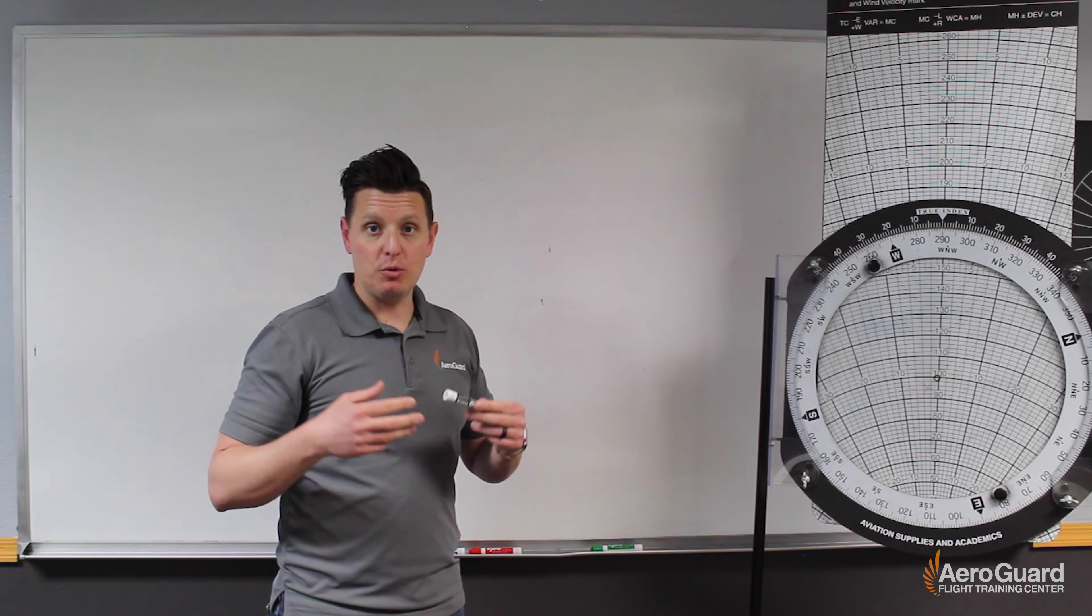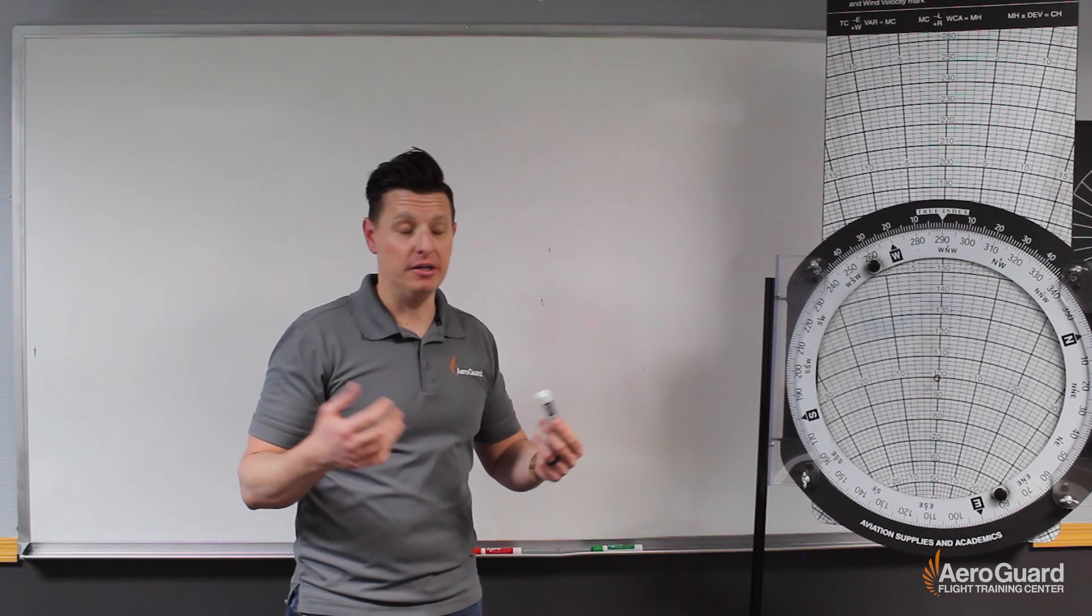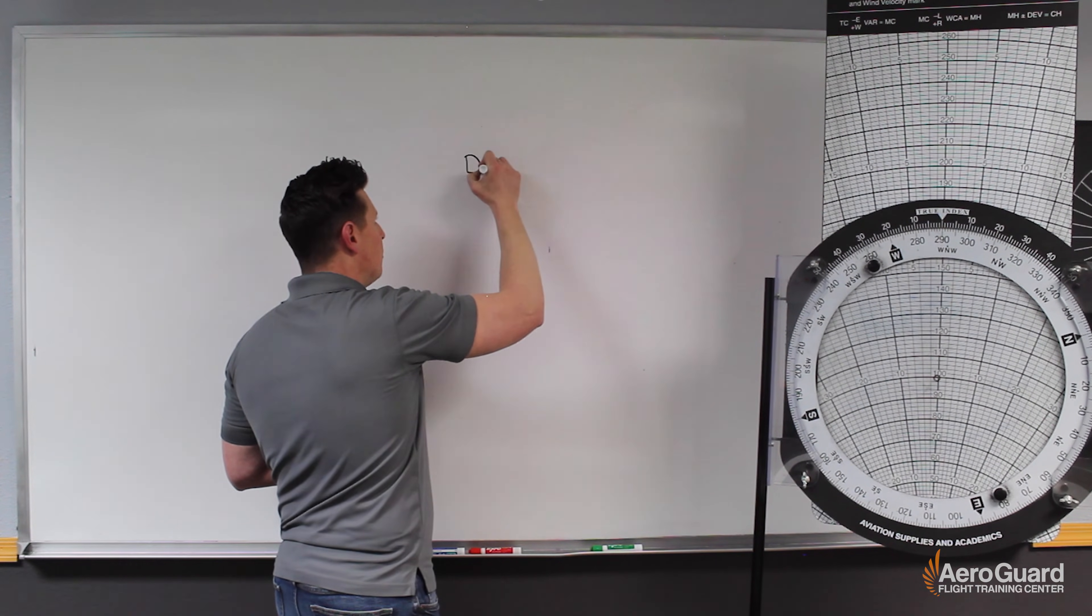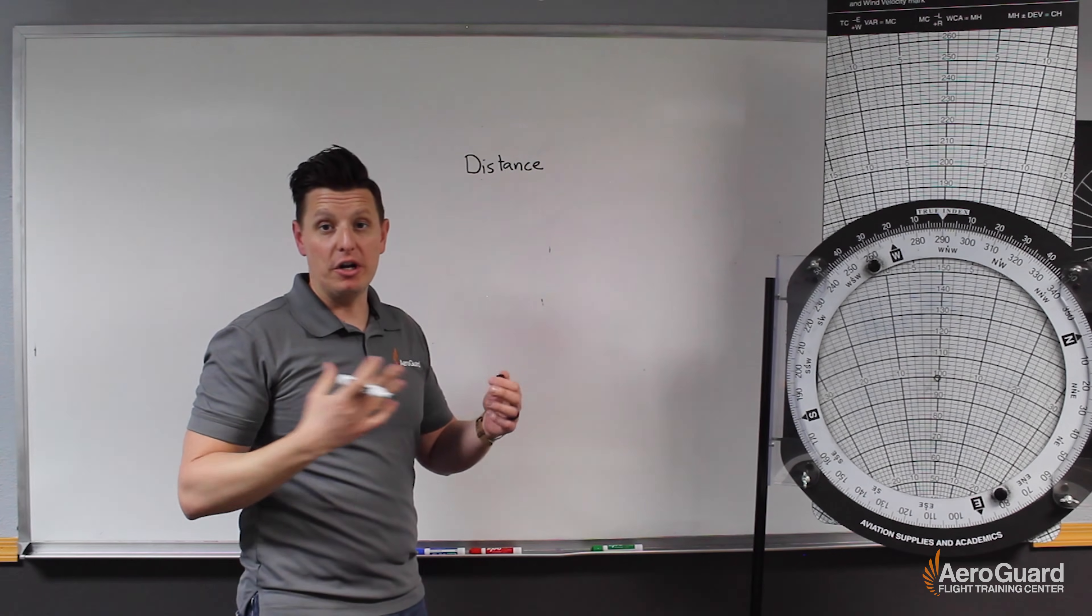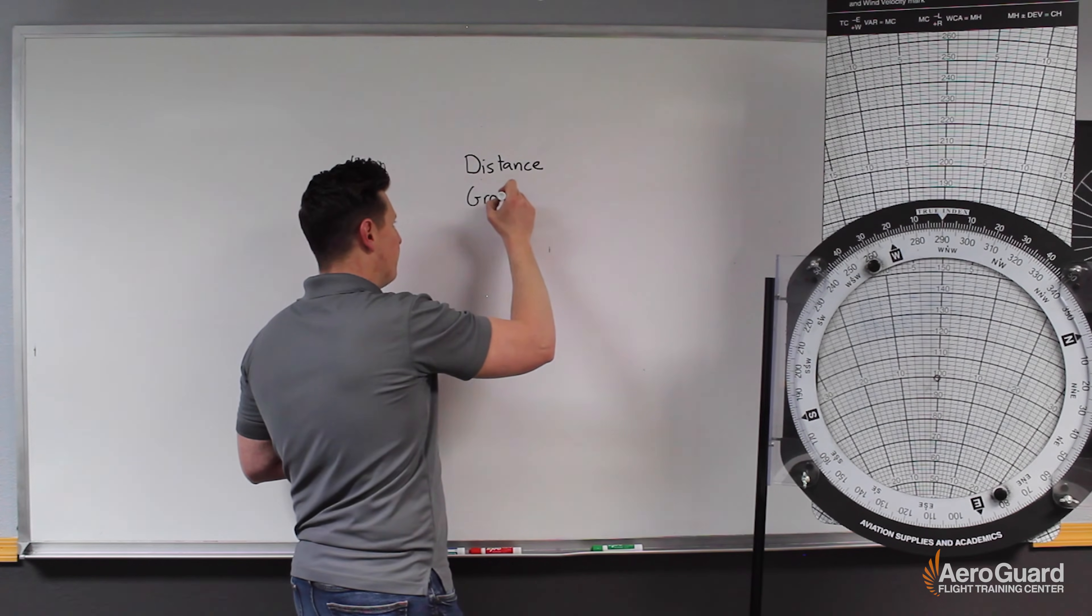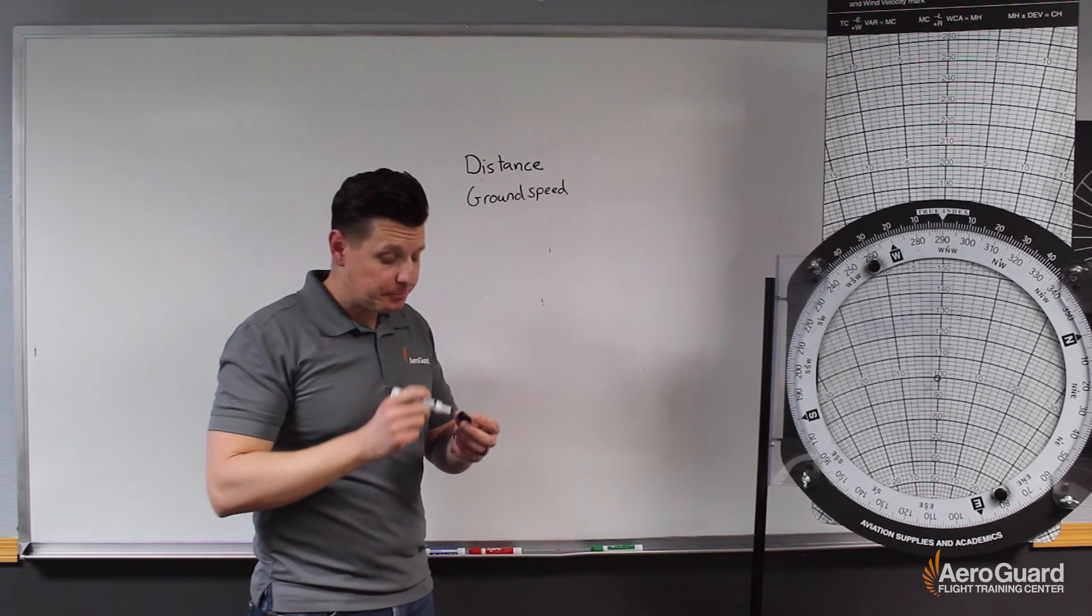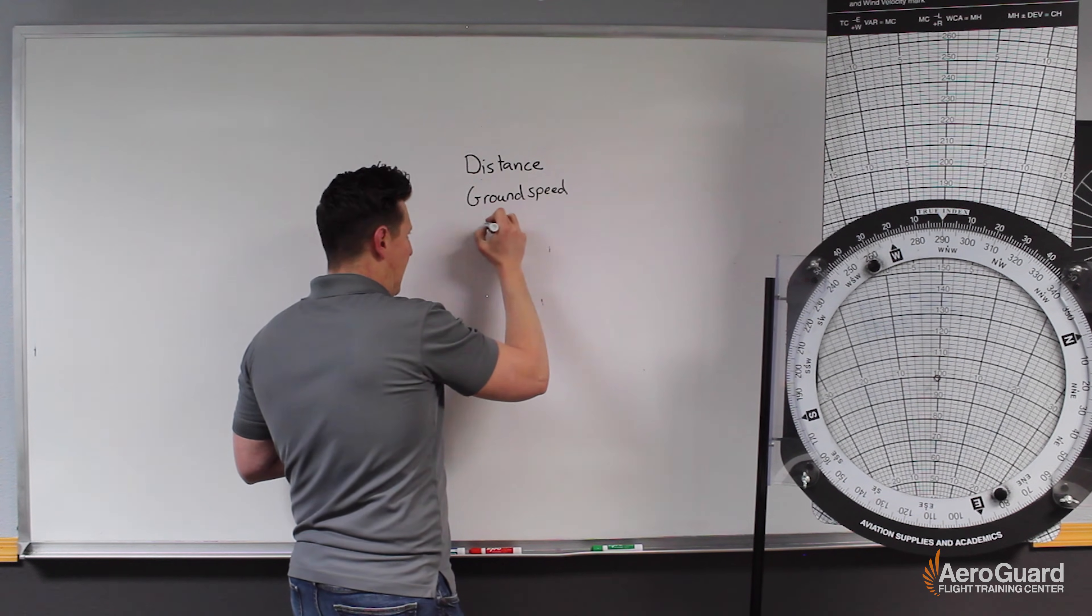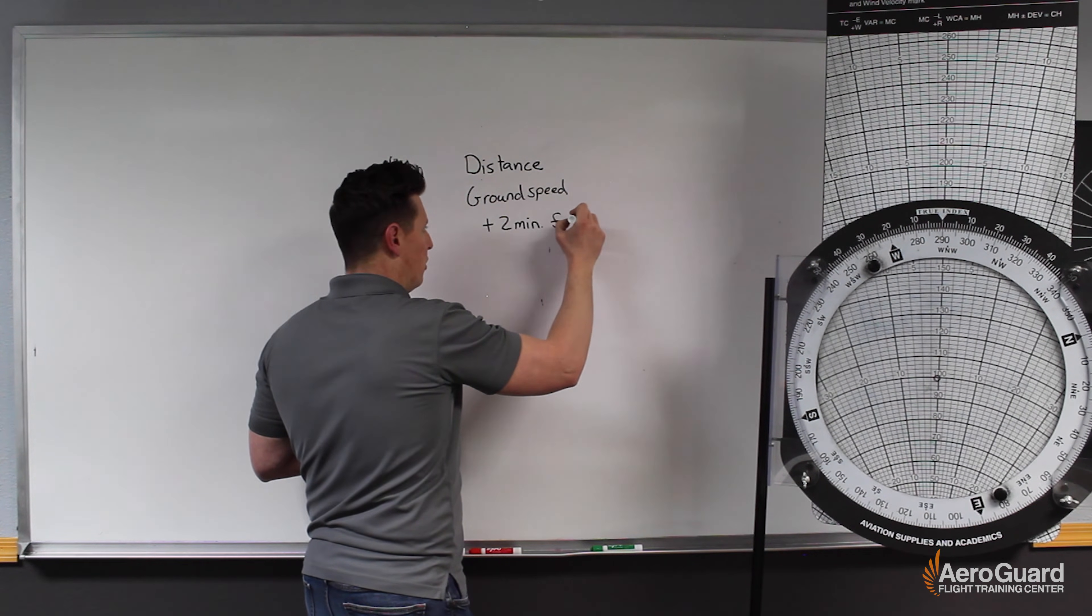In order for us to solve this question correctly, we're gonna have a couple of things that we need to ultimately calculate. One thing that we're gonna need to know is what is the distance for this flight. We're gonna need to apply then our ground speed to that distance. And then the last step that we can't forget about is to add our two minutes for the climb.